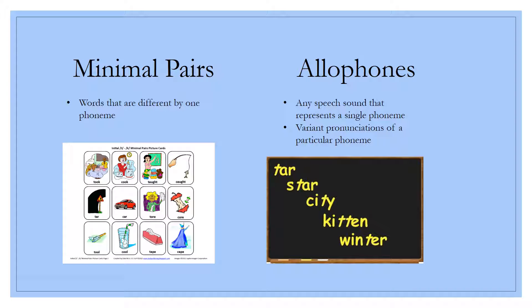Then we have minimal pairs. Minimal pairs are words that are different by one phoneme. It's when two words are almost the same, but have a different meaning because of one phoneme, just like tape and cape. The beginning phonemes are very different, and that changes the entire context of the word.